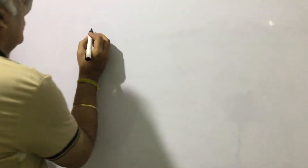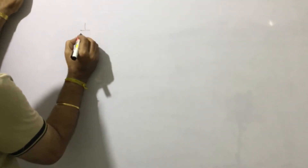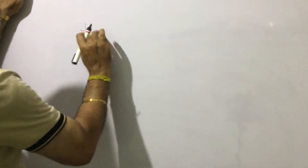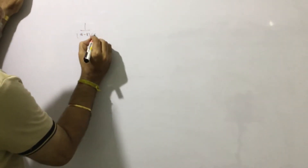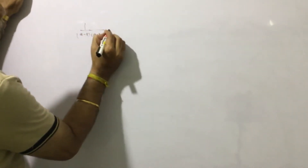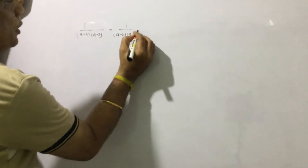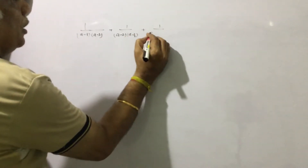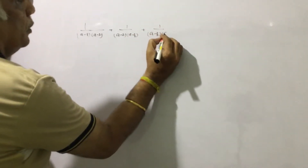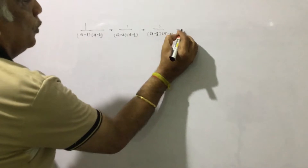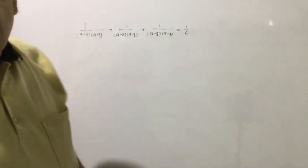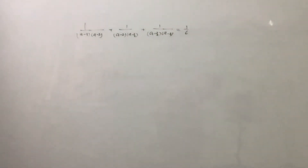Dear friends, welcome to my channel. We will solve one equation today. The equation is: (a minus 1) plus 1 upon (a minus 1) times (a minus 2), plus 1 upon (a minus 2) times (a minus 3), plus 1 upon (a minus 3) times (a minus 4), equal to 1 upon 6. We have to find out the value of a in this equation.